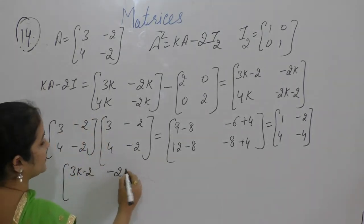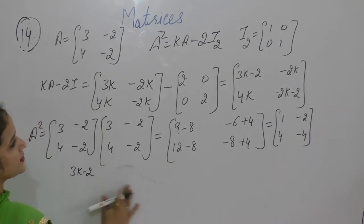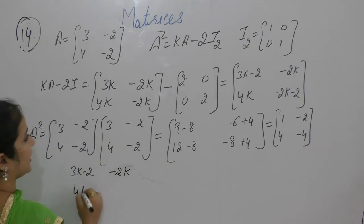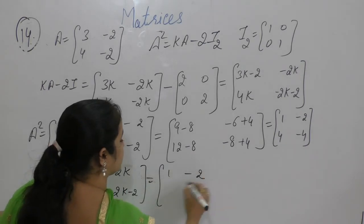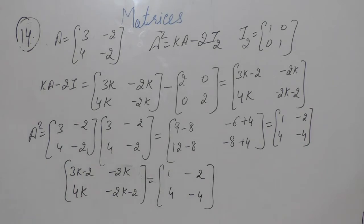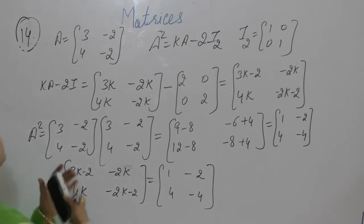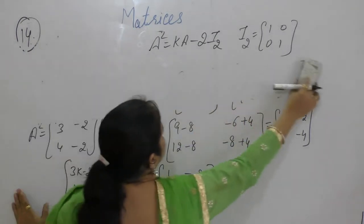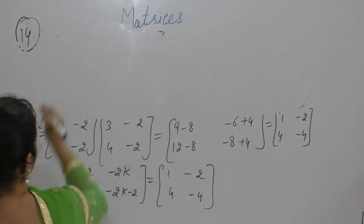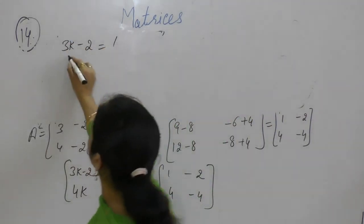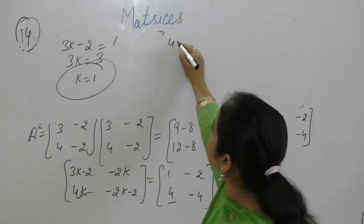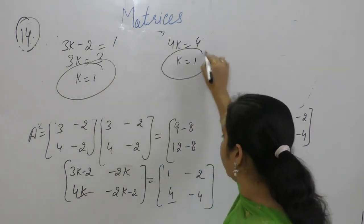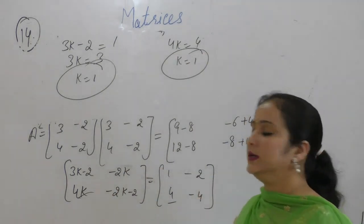So [[3k-2, -2k], [4k, -2k-2]] equals [[1, -2], [4, -4]]. Since the two matrices are equal, we equate their corresponding elements. 3k - 2 equals 1, so 3k equals 3, giving k equals 1. We can equate any term: 4k equals 4 also gives k equals 1. And minus 2k equals minus 2 also gives k equals 1. So k equals 1.